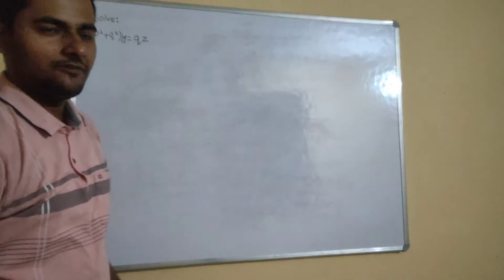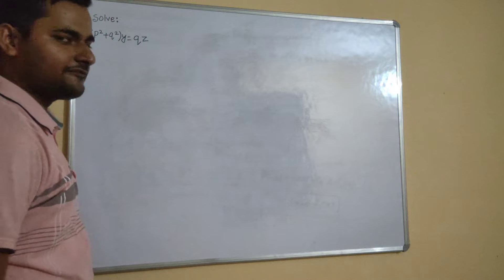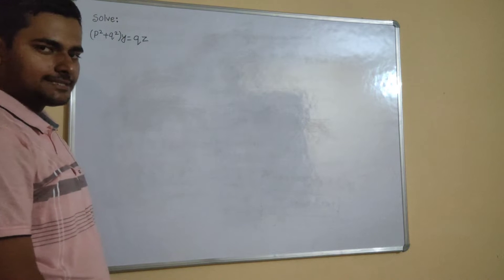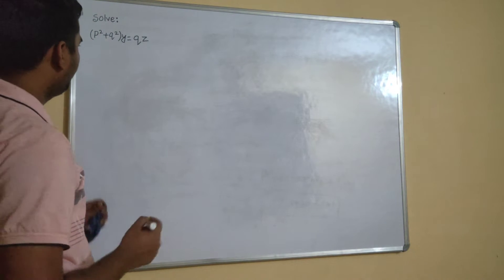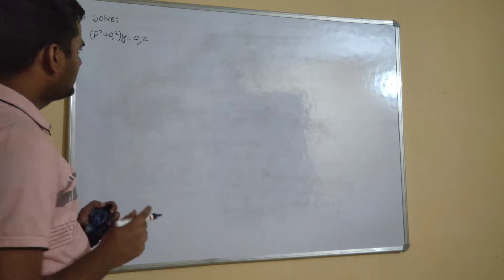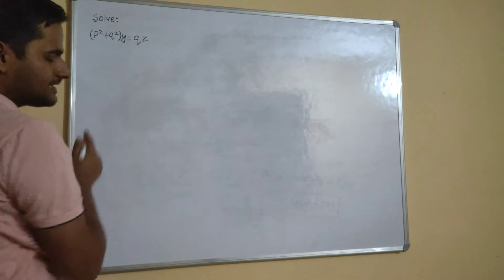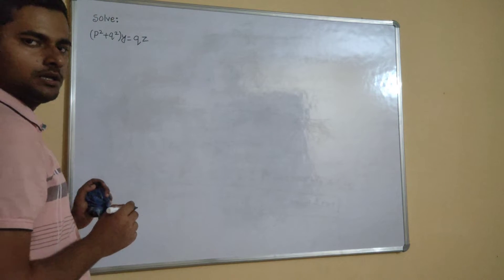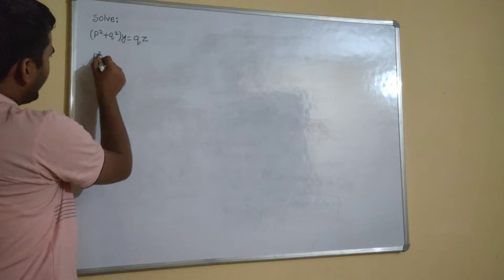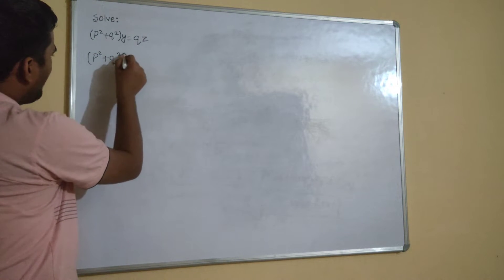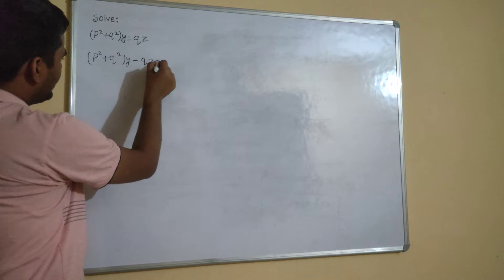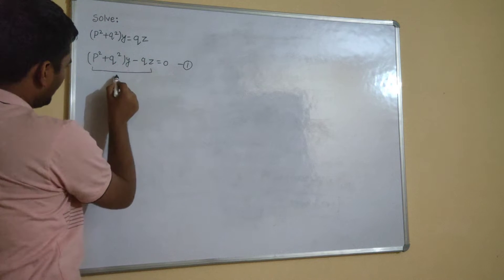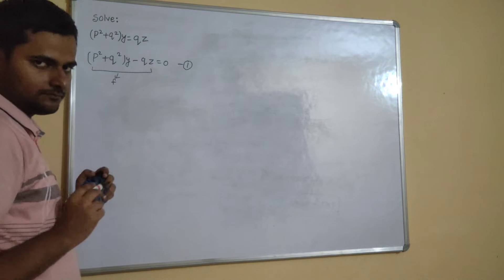Namaskar. Today we will solve one more question from partial differential equations using Charpitt's method. The first step in Charpitt's method is to bring everything to the left, so this becomes a function of x, y, z, p, q. This will become p² + q²y − qz = 0, and this entire expression is our function f.